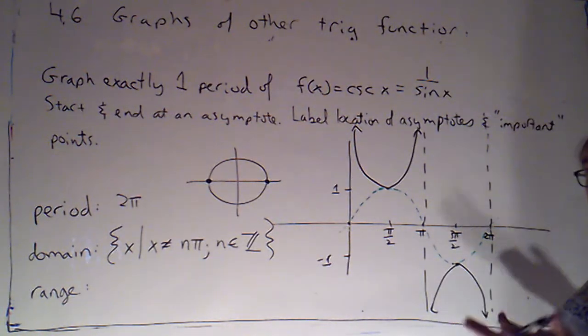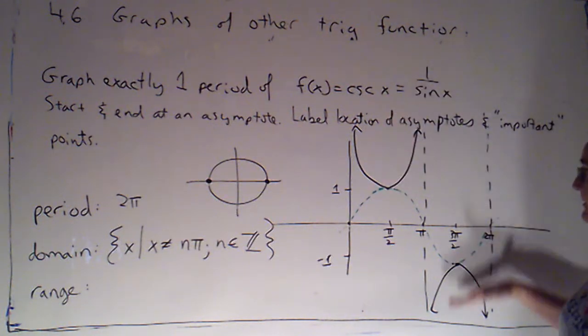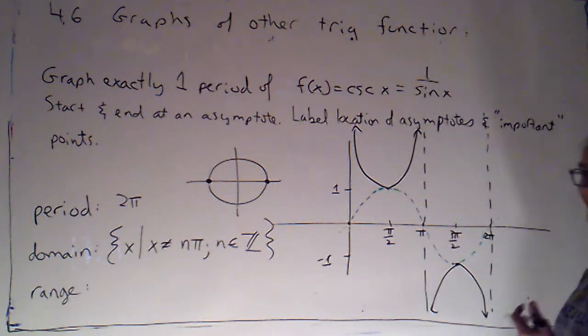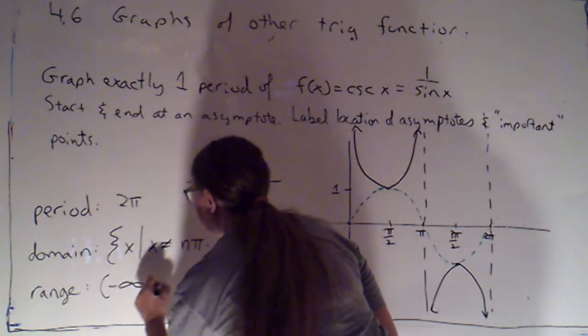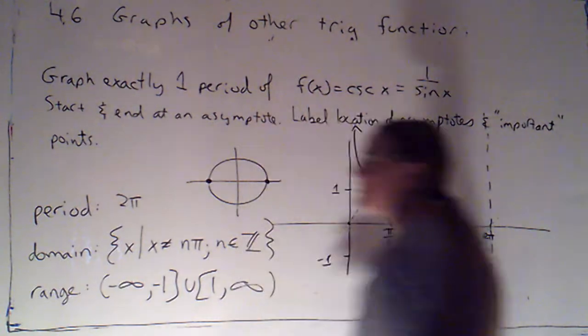And the range looks like it's going to be the same as secant. We've got one and higher, negative one and lower with this no man's land in between. So we'd have negative infinity to negative one, union one to infinity.